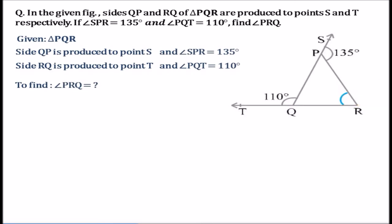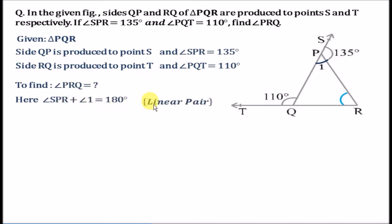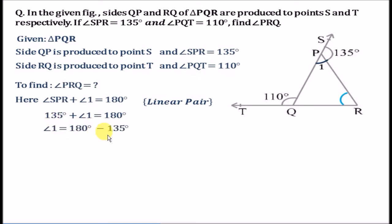The angle adjacent to angle SPR is forming a linear pair, so let us label it as angle 1 — angle QPR as angle 1. Since angle SPR and angle 1 are forming a linear pair, angle SPR plus angle 1 equals 180 degrees. Putting the value: 135 degrees plus angle 1 equals 180 degrees. Taking 135 to the other side, angle 1 equals 45 degrees.